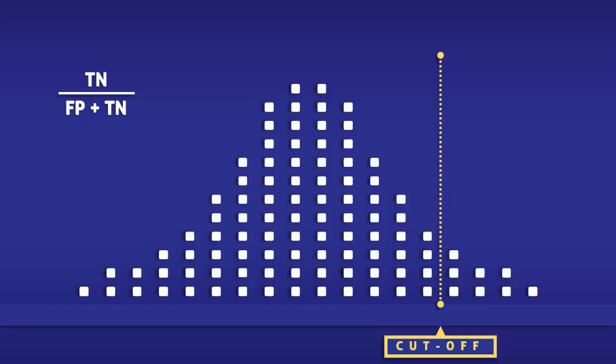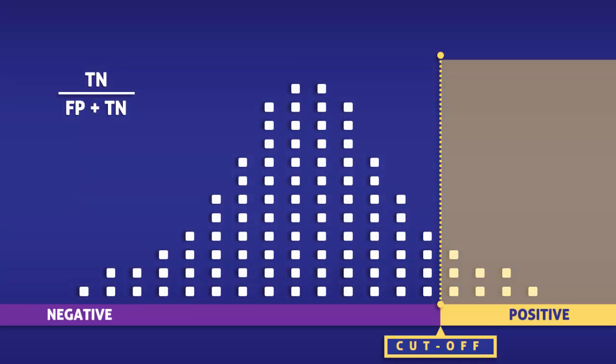This yellow line represents a cutoff level for a test. To the left of the line, the test returns negative, and to the right, it returns positive.